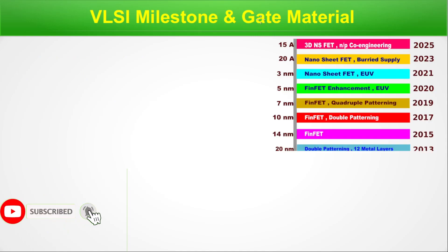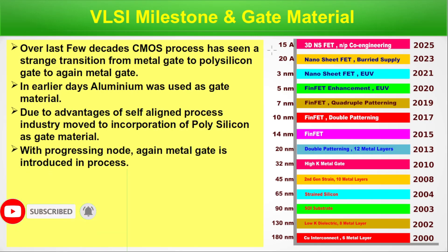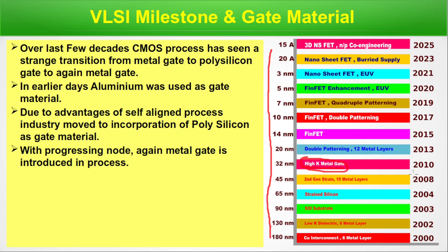VLSM milestone and gate material. This is the diagram we showed in the last two episodes on SOI and high-K. This is the high-K metal gate, with a timeline of 2010 and technology node of 32 nanometer. Before that, polysilicon was used. This list shows milestones for 25 years, 2000 to 2025. Before that, there was a time when aluminium was used as gate material. Over the last few decades, CMOS process has seen a transition from metal gate to polysilicon gate and back to metal gate.